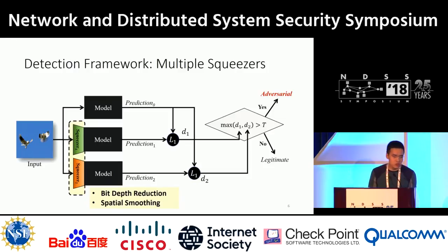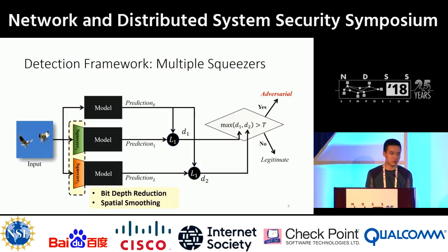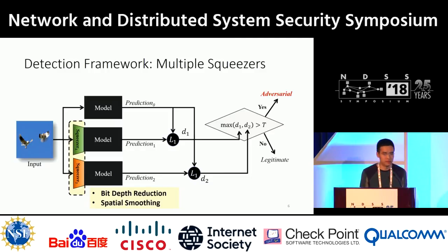Next, I will introduce the two feature squeezers we have investigated in our paper: bit-depth reduction and spatial smoothing.